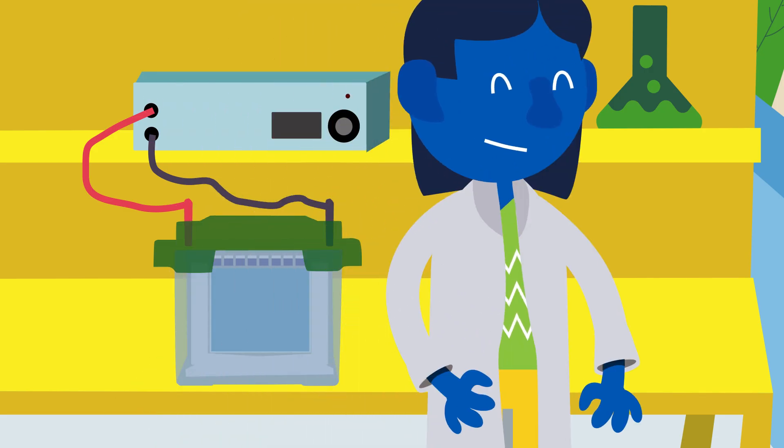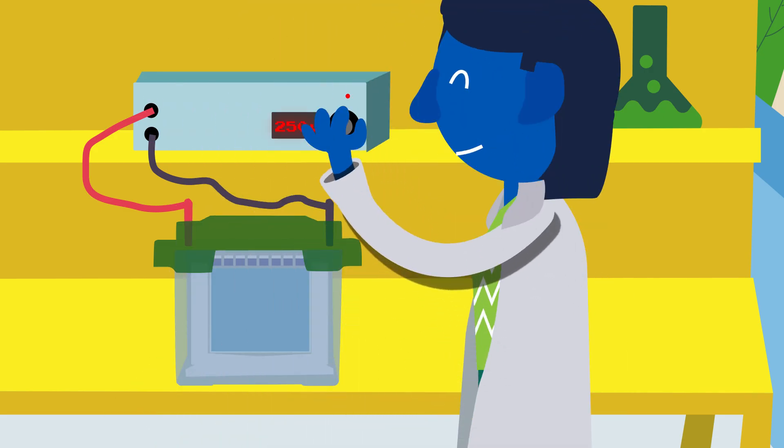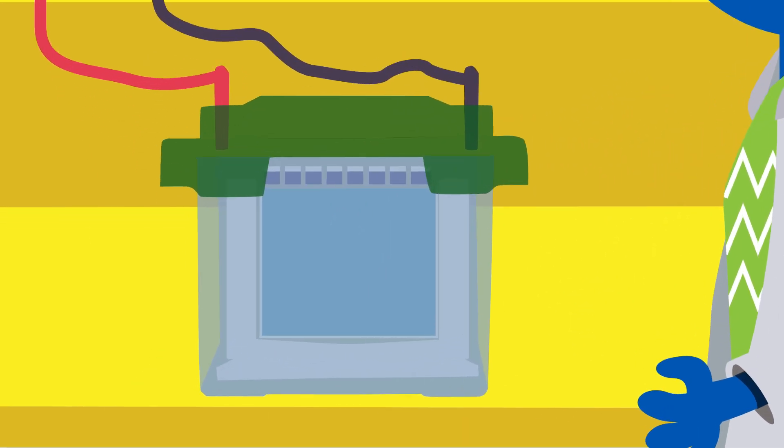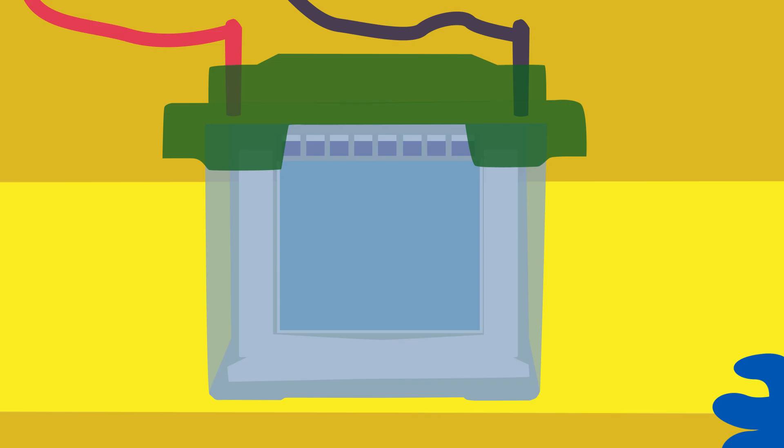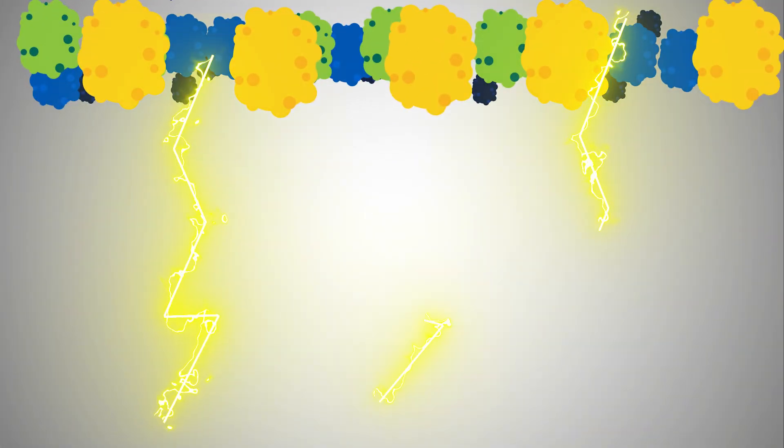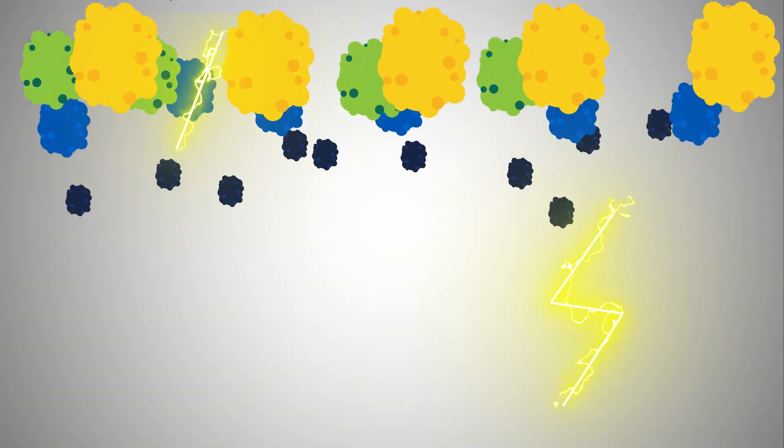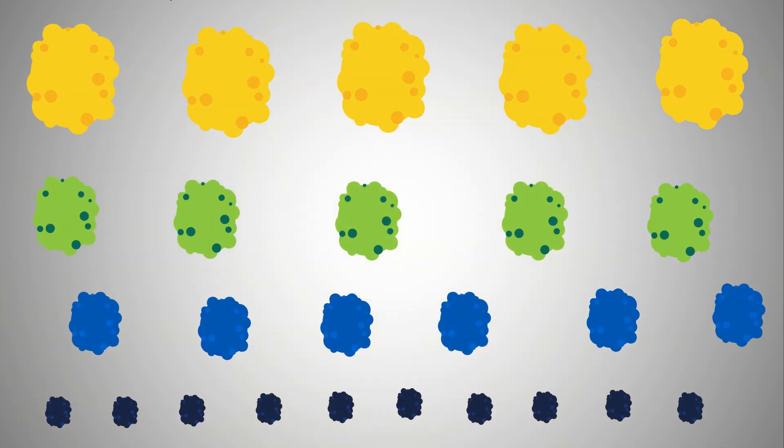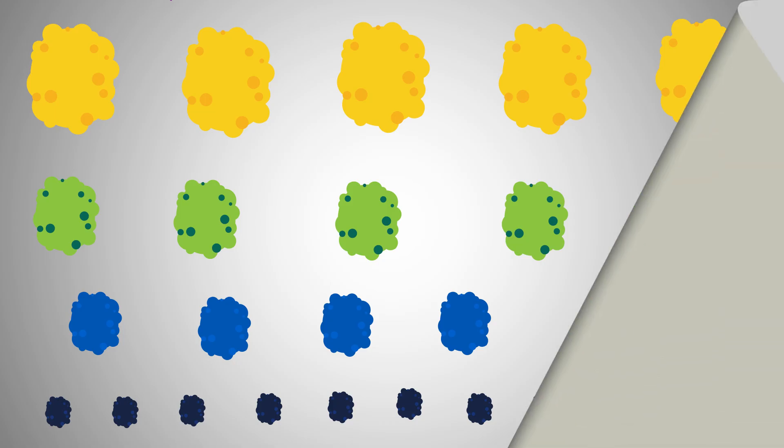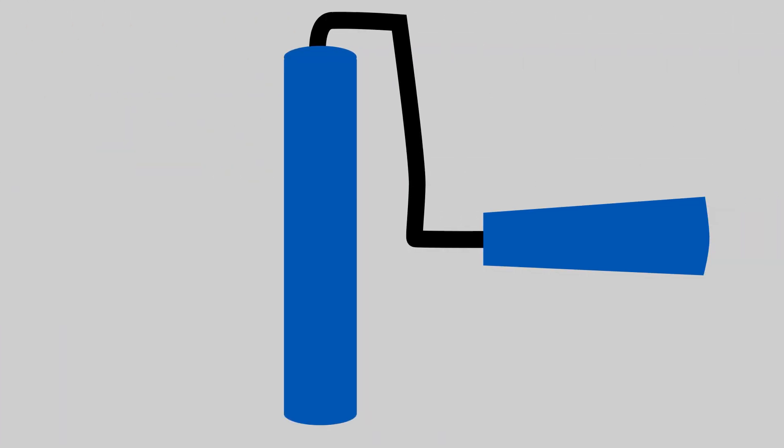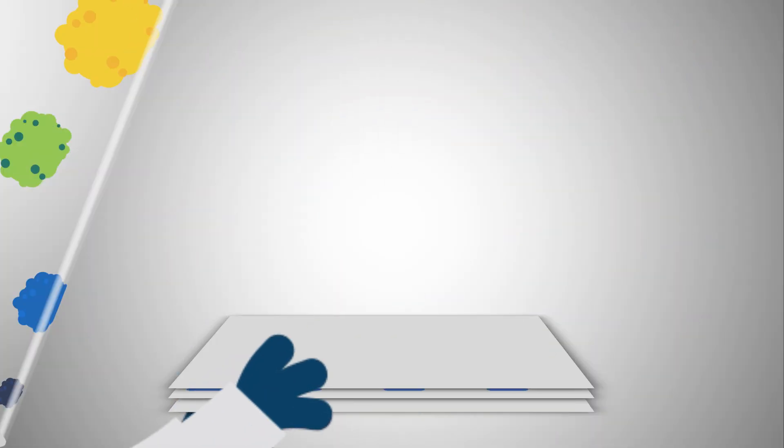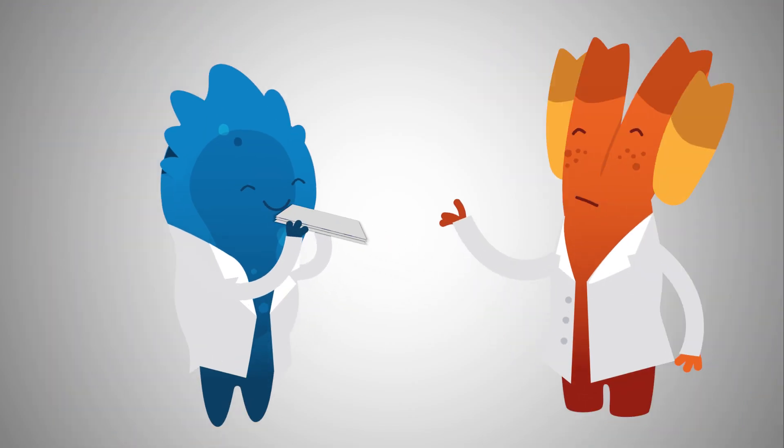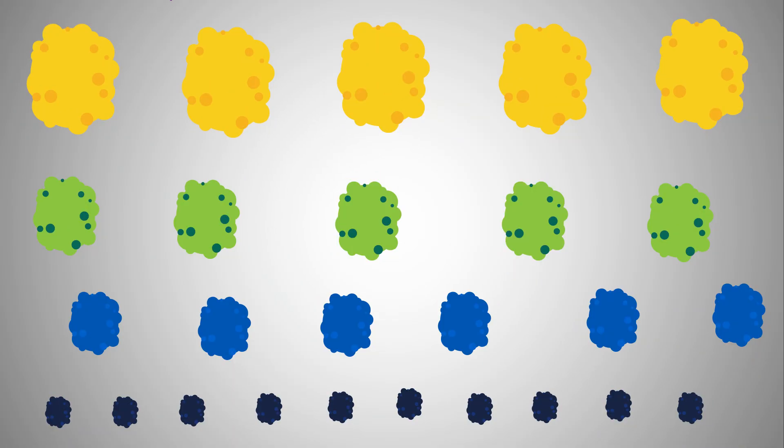A Western blot is a semi-quantifiable method that can provide additional information about the protein, like its size. In a Western blot, lysed and denatured samples are run on an acrylamide gel that enables proteins to be separated by size. The proteins are then transferred from a fragile gel to a more sturdy membrane in a package known more commonly as a transfer sandwich.